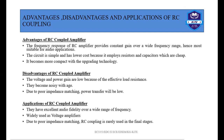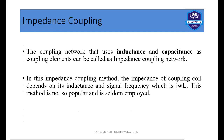Applications of RC coupling: they have excellent audio fidelity over a wide range of frequency and are used in voltage amplifiers. Due to poor impedance matching, RC coupling is rarely used in final stages. Next is impedance coupling — a coupling network that uses inductance and capacitance elements. In impedance coupling, the impedance of the coupling coil depends on inductance and signal frequency, expressed as jωL. This method is not popular and is seldom employed.